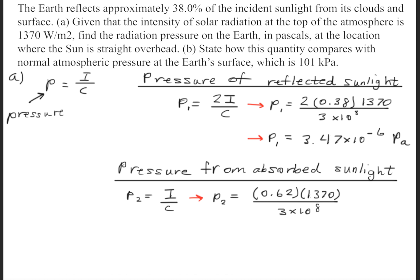Next we'll need to find the pressure from the absorbed sunlight. Now there's only one source of pressure here. The surface of Earth is absorbing the sunlight, so there's only one source of pressure. Therefore we just use the equation P is equal to the intensity divided by the speed of light. So 38% got reflected, so that means the other 62% was absorbed by the Earth.